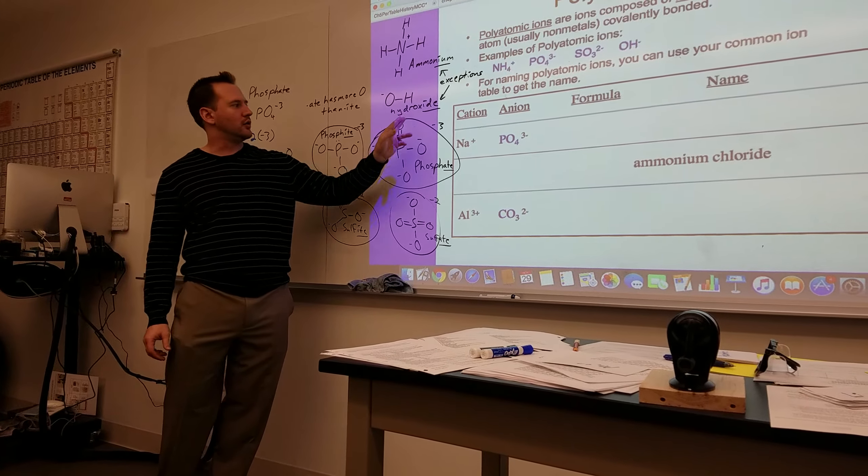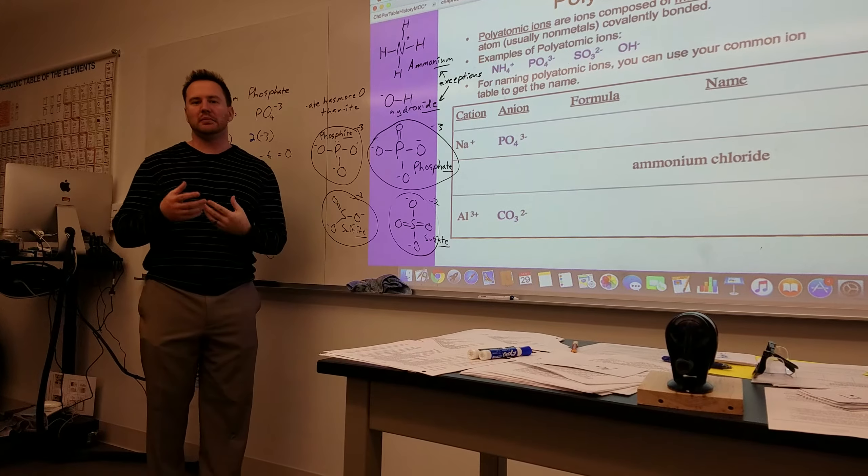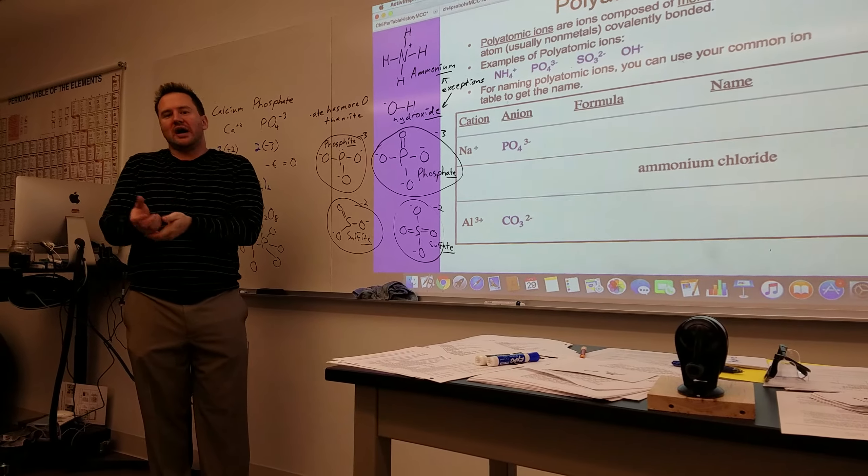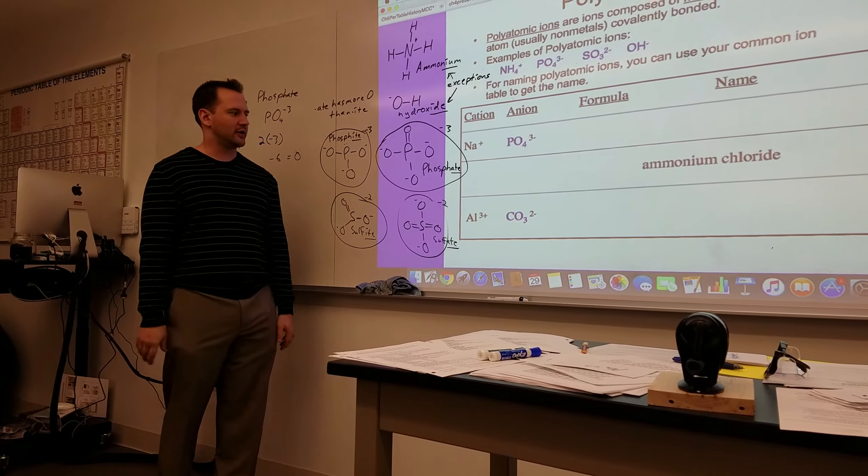But most of the polyatomic ions don't end in ium or ide. Usually if something ends in ide, we're talking about a main group element in a binary ionic compound, like phosphide, oxide. That refers to a singular element, or monatomic anion.